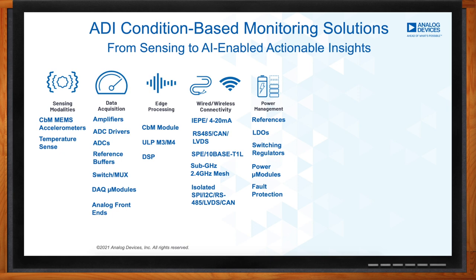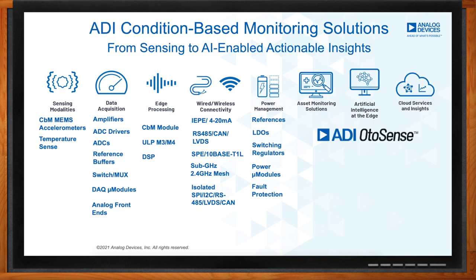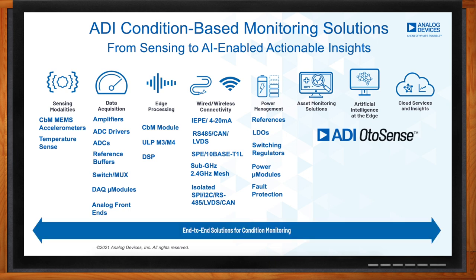Most importantly, where ADI is most focused is combining these technologies in what we call asset monitoring solutions. This is where we provide customers reference designs and platforms that allow them to quickly evaluate these technologies and ultimately accelerate their time to market. The last step is to take the asset health data and transform it into asset health insights — helping customers decide whether an asset needs to be serviced or has components to be replaced. That's where ADI AutoSense sits in as an AI platform to interpret the data. Analog Devices is in a unique position in terms of breadth of offering to provide an end-to-end solution for condition monitoring.